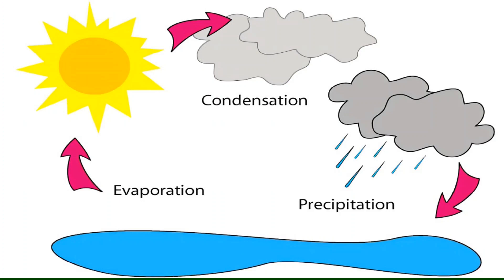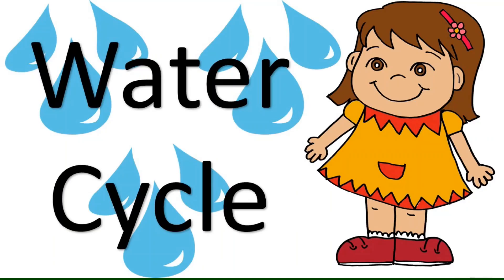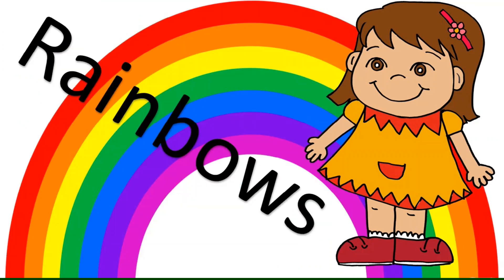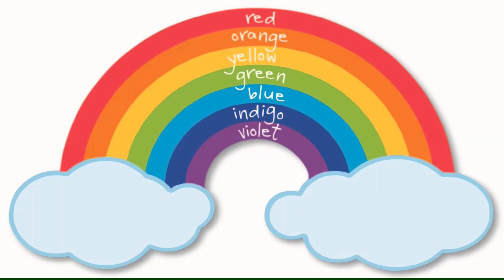Now, how do we see a rainbow? A rainbow has red, orange, yellow, green, blue, indigo, and violet colors.